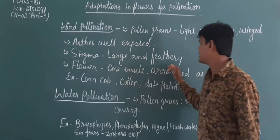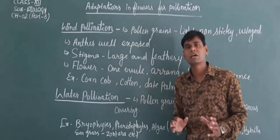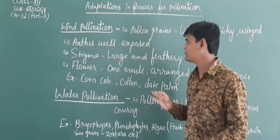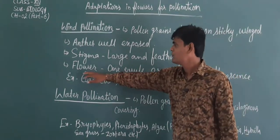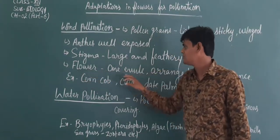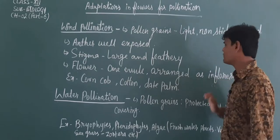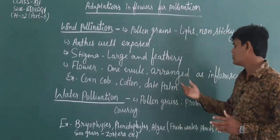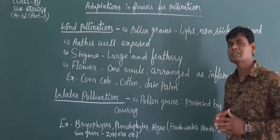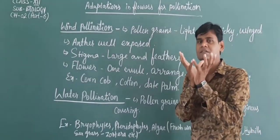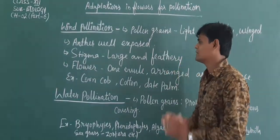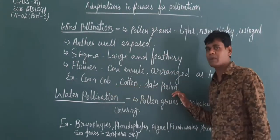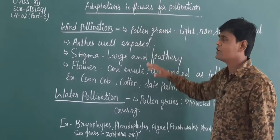Stigma is large and feathery. And each flower has one ovule, arranged as an inflorescence. For example, corn cob, cotton, and date palm — these are examples of wind pollination.